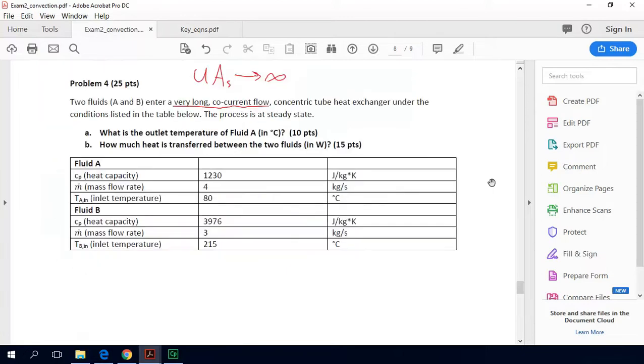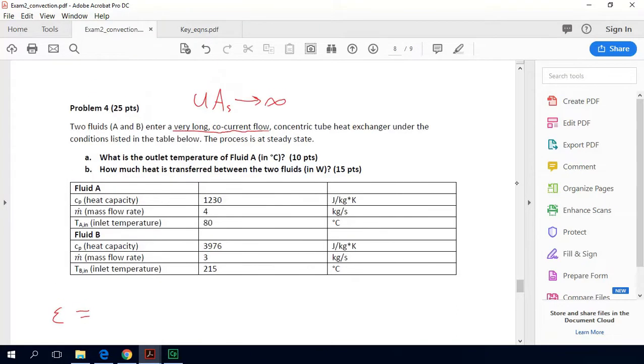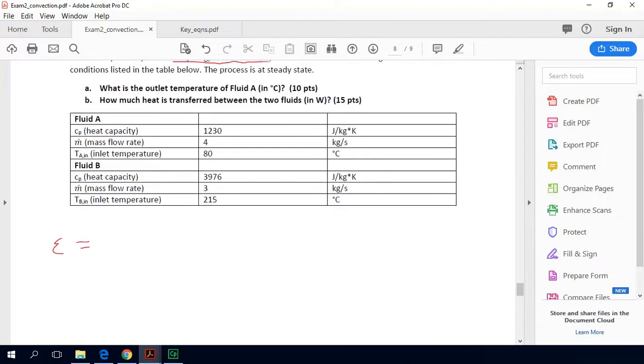We'll go back to the exam problem. So we can actually calculate what the effectiveness of the heat exchanger would be. And we would plug in, because our U times surface area is infinity, our number of NTUs, which is defined as U times surface area divided by m dot Cp of our minimum fluid, that is also infinite. So when we plug that into our effectiveness relationship...